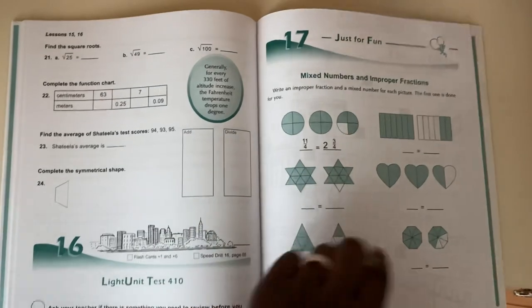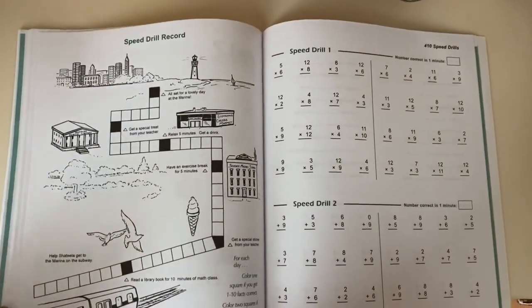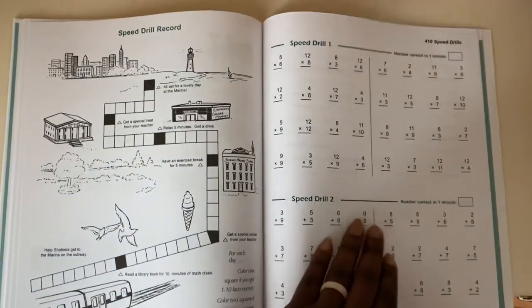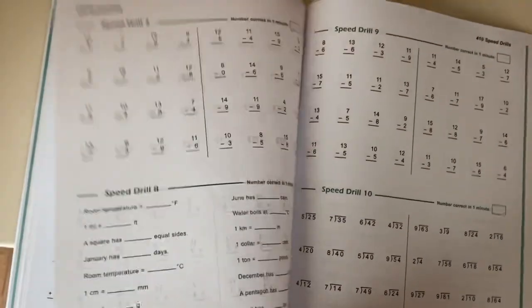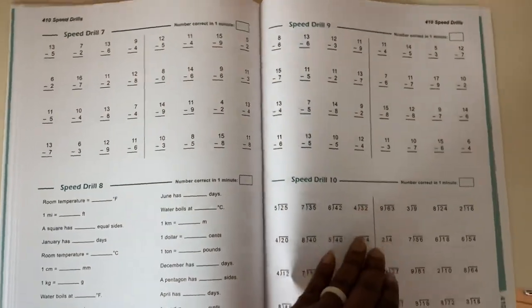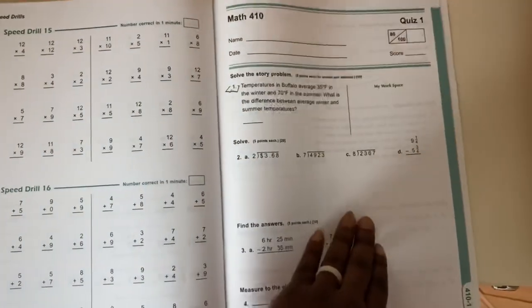16 is the test, 17 is just for fun, so each light unit has 17 lessons and the 16th is the test and 17th is just for fun. Speed drills in the back and the quizzes in the back. So that's it.